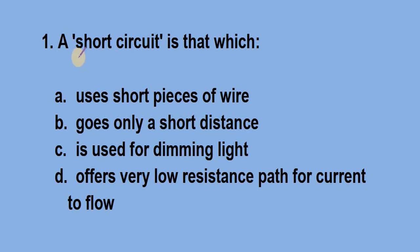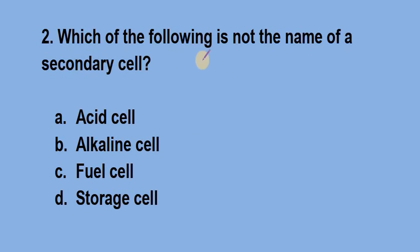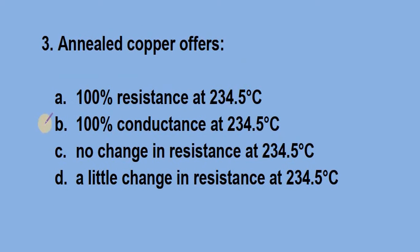Question number 1, a short circuit is that which? Answer is option D, offers very low resistance path for current to flow. Question number 2, which of the following is not the name of a secondary cell? Answer is option C, fuel cell. Question number 3, annealed copper offers? Answer is option B, 100% conductance at 234.5 degree Celsius.